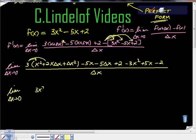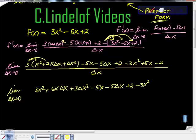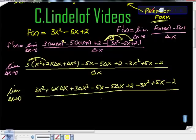Which will give me 3x squared plus 6x change of x plus 3 changes of x squared minus 5x minus 5 changes of x plus 2 minus 3x squared plus 5x minus 2. It looks horrible, and they want to see all of it.